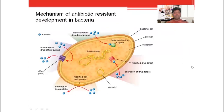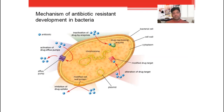Now I would like to talk about the mechanisms of development of resistance in bacteria. There are four main mechanisms by which resistance may develop. The first is inactivation of the drug by enzyme. Bacteria having the competency to produce certain enzymes may destroy, damage, or deactivate drugs. If a drug is deactivated or destroyed, it will not produce a pharmacological effect, so it will not be able to control and kill the bacteria or treat the infection.